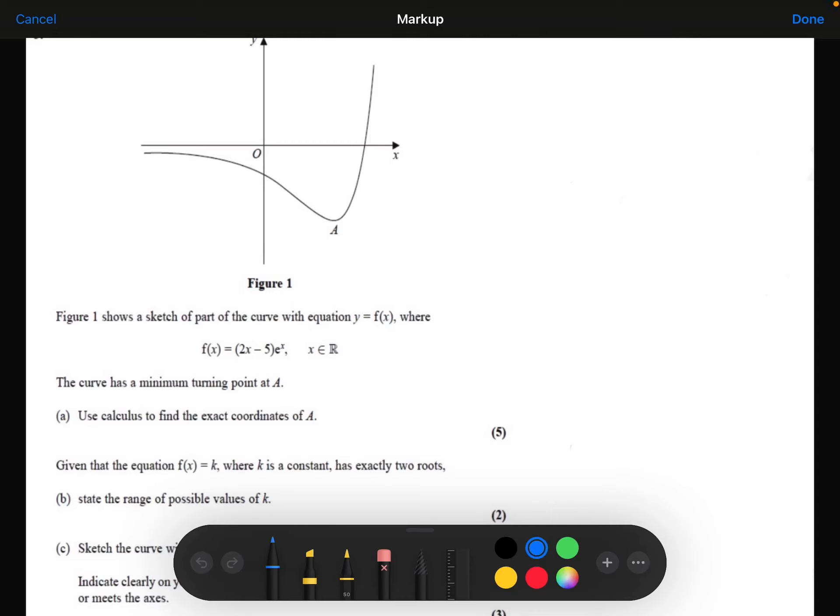Figure 1 shows a sketch of part of the curve with equation y equals f of x, where f of x is equal to 2x minus 5 multiplied by e to the power x, where x is a real number. The curve has a minimum turning point at point A. Use calculus to find the exact coordinates of A.